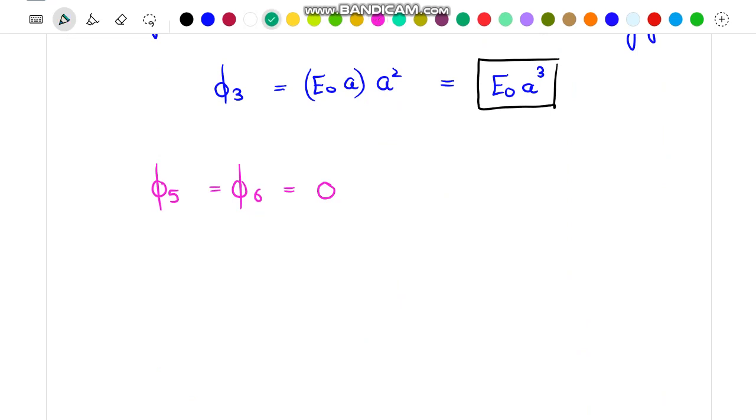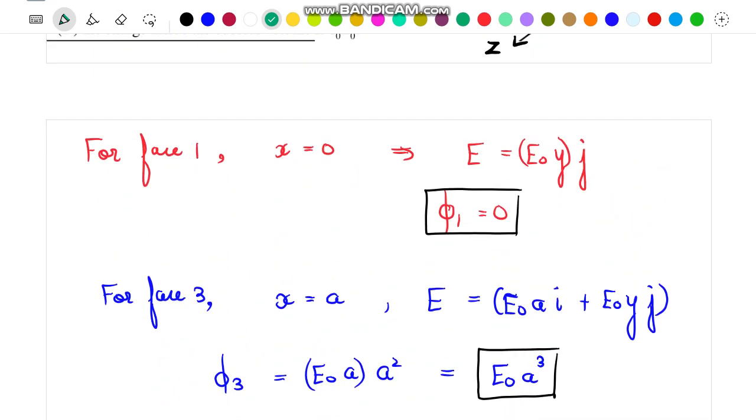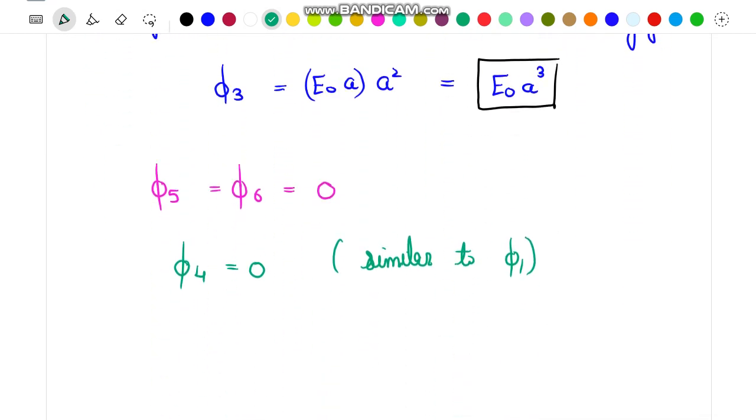Further analysis reveals to us that flux passing through face 4 will also be 0, and it is for a reason which is similar to the reason mentioned for finding flux in face 1.